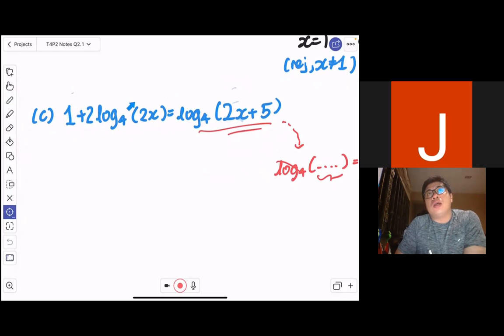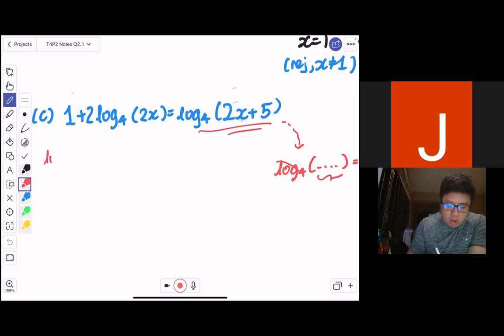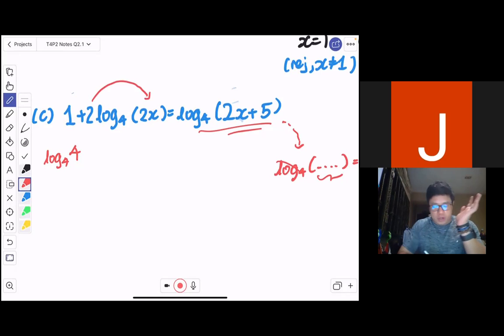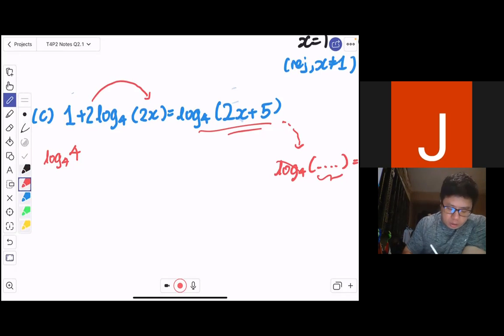So for me to pack 1 into the log, I have to convert 1 to a log as well. So I'm going to change my 1 on purpose to log₄(4), because we know that log_a(a) = 1. So I change 1 to log₄(4). And I'm going to bring my coefficient up as well, because if my coefficient is there, I cannot apply any laws of logarithm. If my coefficient is there, I cannot apply any laws of logarithm.